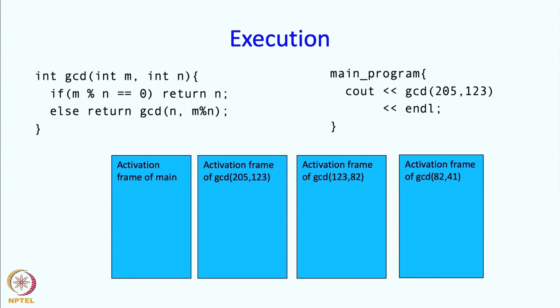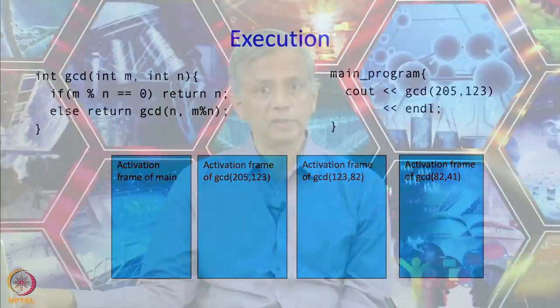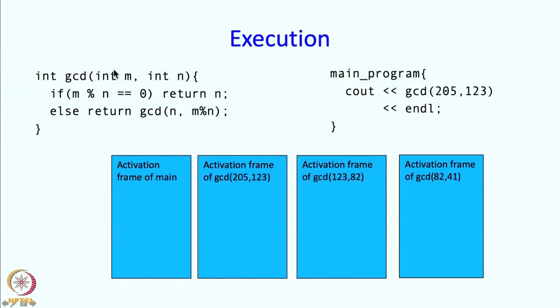At this point we have 4 activation frames in memory: main (suspended), the first GCD call (suspended), the second GCD call (suspended), and the current GCD call executing with arguments 82 and 41. When we execute this call, M=82 and N=41. This time M is a multiple of N — 82 is twice 41 — so M mod N equals 0 and we return N. This call returns 41.